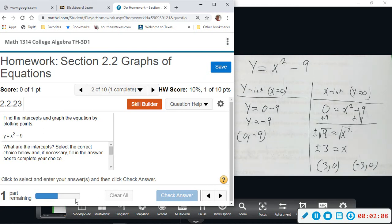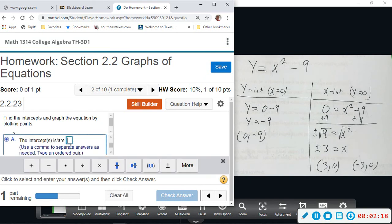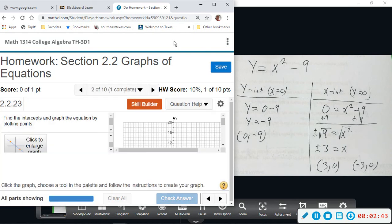So these will be our intercepts. From here we can insert them and then graph. So intercepts are zero comma negative nine, three comma zero, and negative three comma zero. So we have three of them. And again, when I graph this, I need to go to full screen, so I'm going to enlarge the graph.